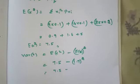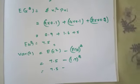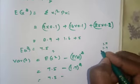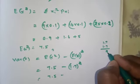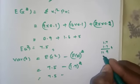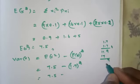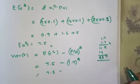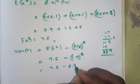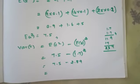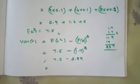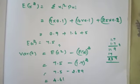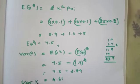1.7 times 1.7 equals 2.89. So variance of x equals 7.5 minus 2.89, which gives 4.61. That is the value of variance of x.